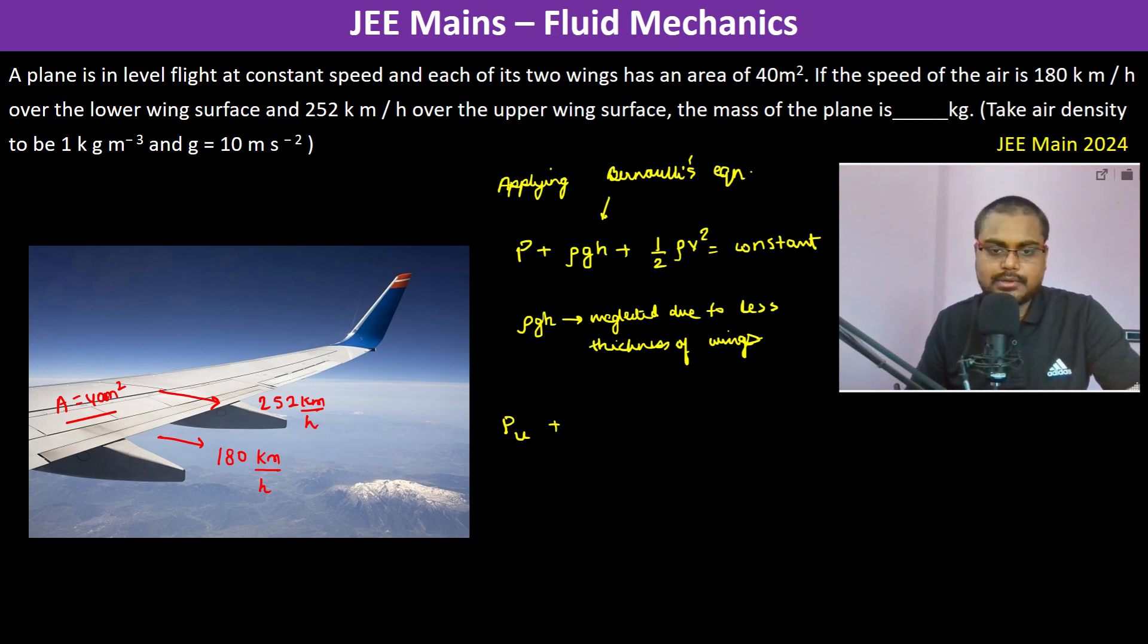So pressure upper plus half into rho into V upper square is equal to pressure lower plus half into rho into velocity lower square.